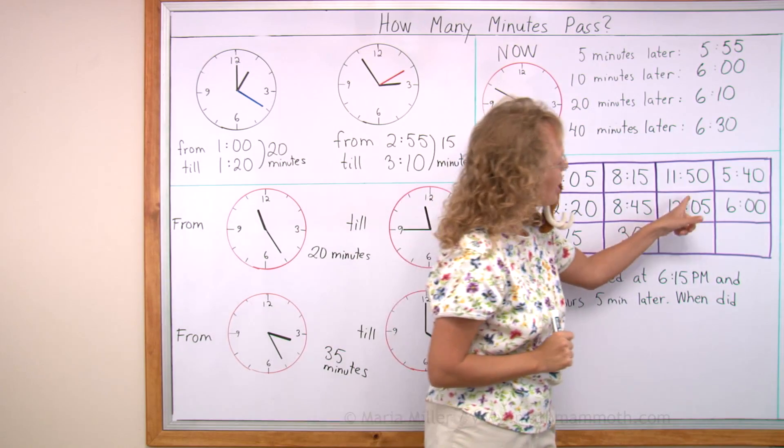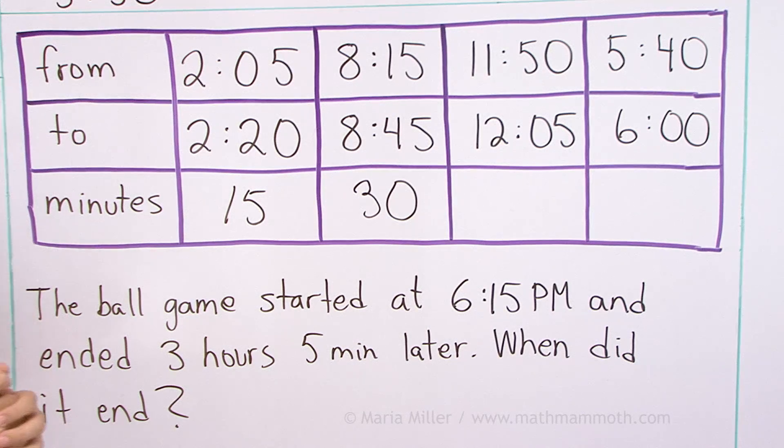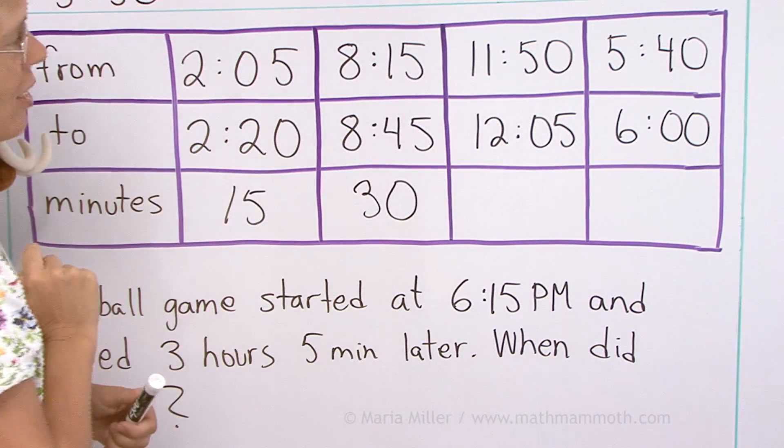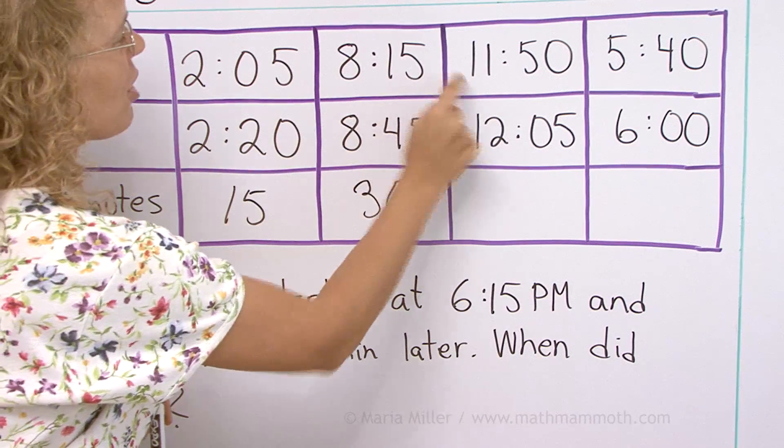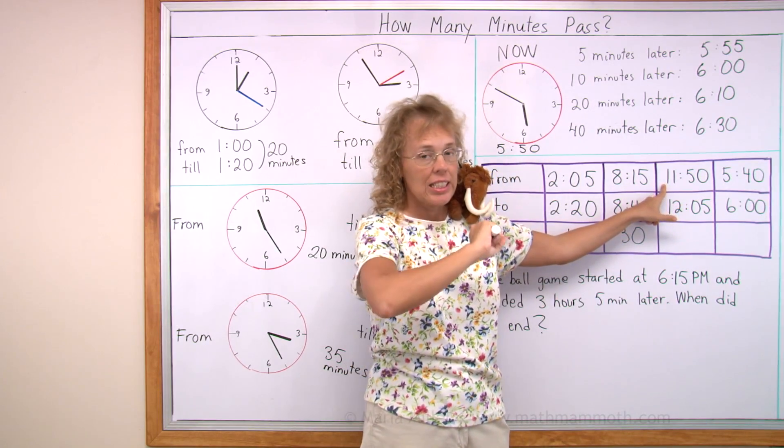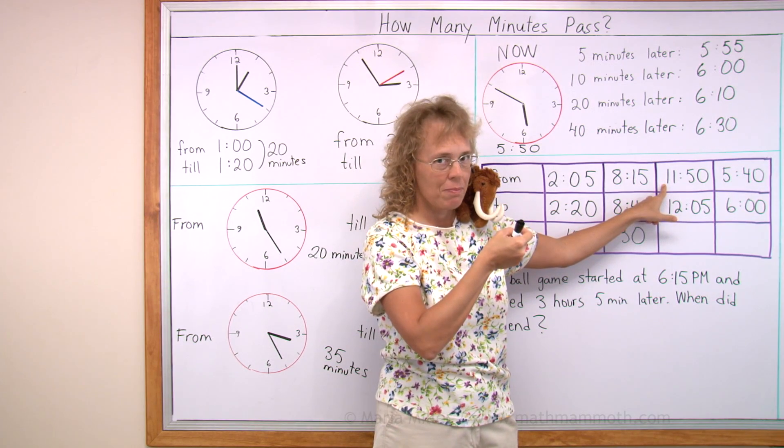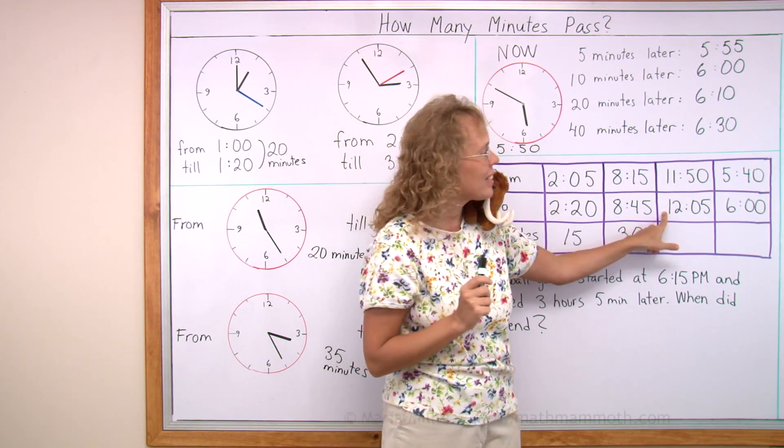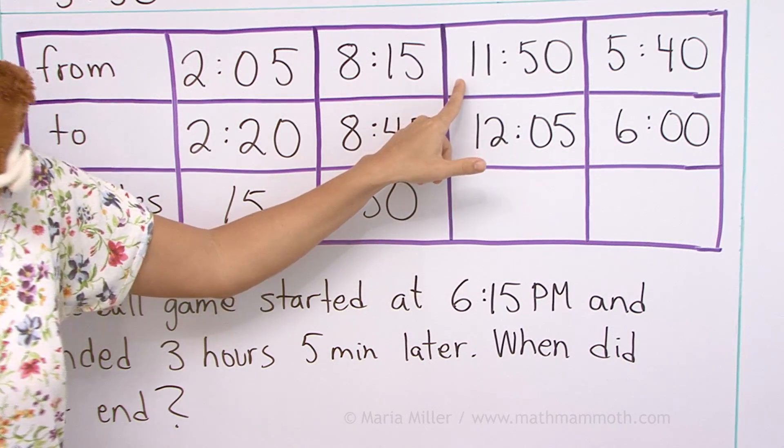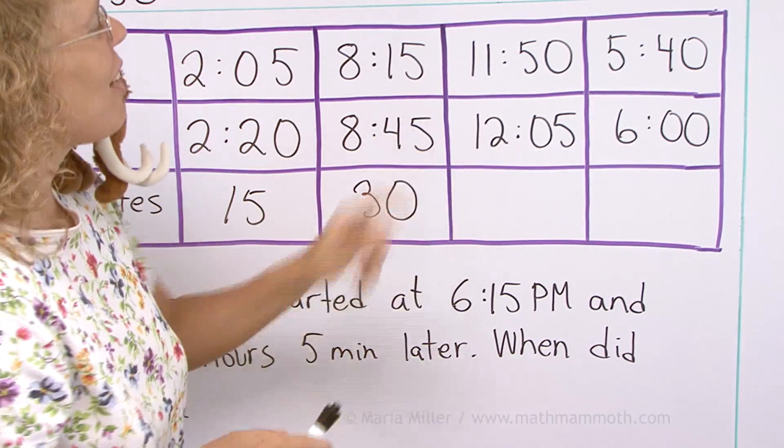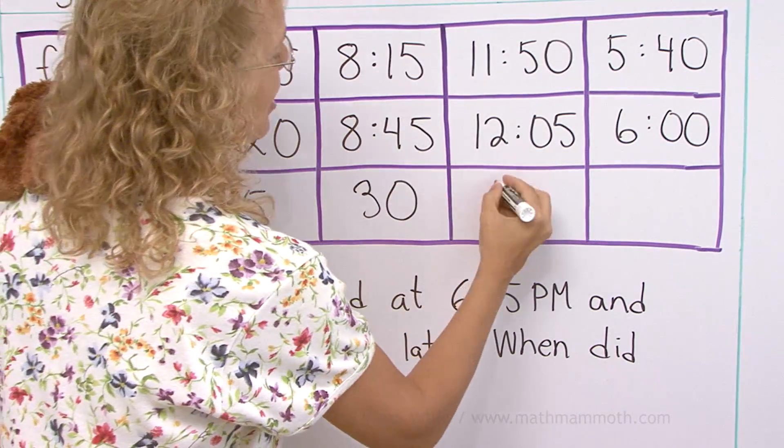This one is a little bit more difficult. 11:50 and 12:05. The hour changes here, okay? So think first, how many minutes is it from 11:50 till 12 o'clock? And then from 12 till 12:05 is, of course, 5 minutes. But from this till 12 should be 10 minutes, yes. And then 5 minutes more, so total 15 minutes.